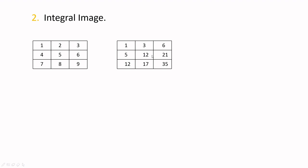Every cell in the integral image is basically the summation of all pixel values to the left and above it in the original image. For example, the value 12 is the sum of all pixels to the left and above that cell. For a cell containing 6, the entire region to its left and above is summed. If you add 4 + 5 + 4 = 9 + 2 = 11 + 1 = 12, that's how you get 12. That is how you compute each and every cell.